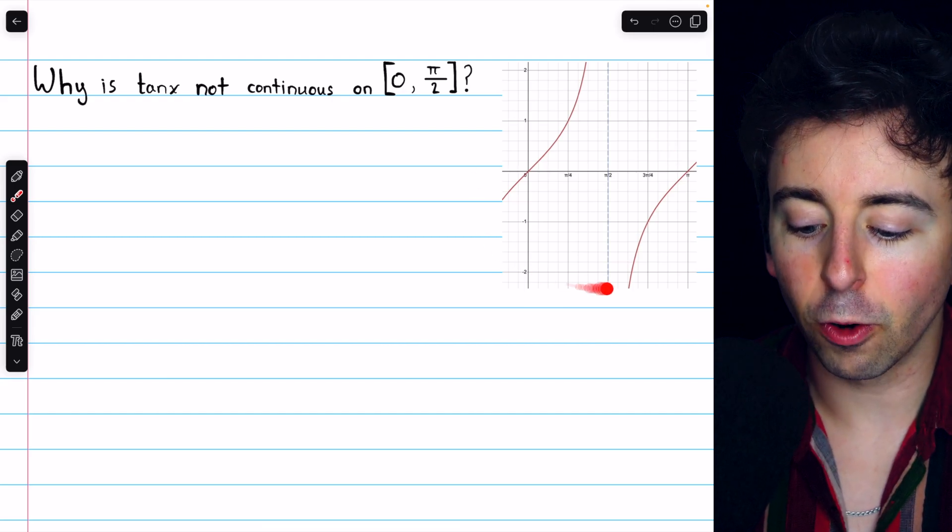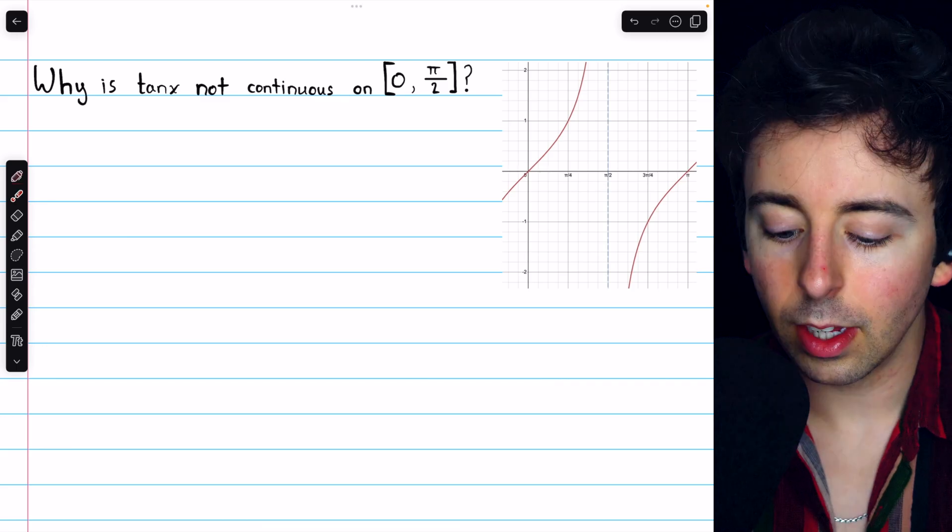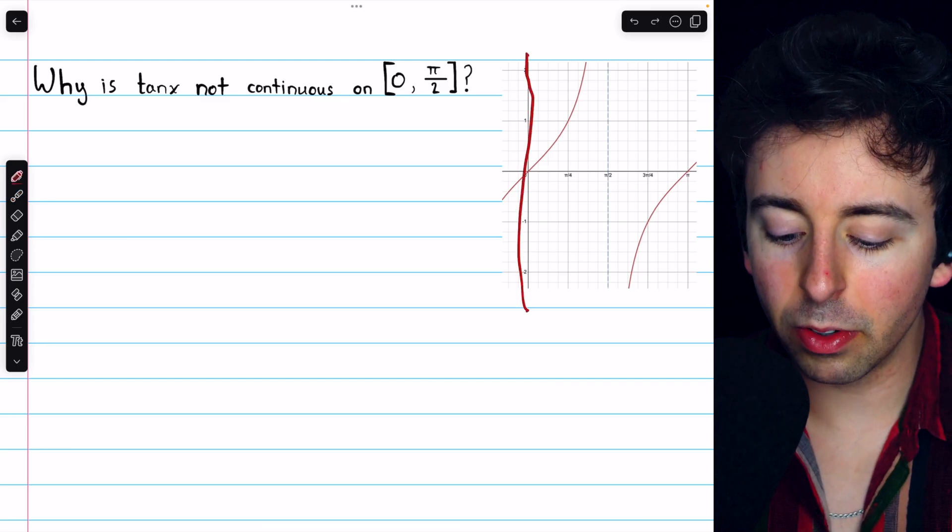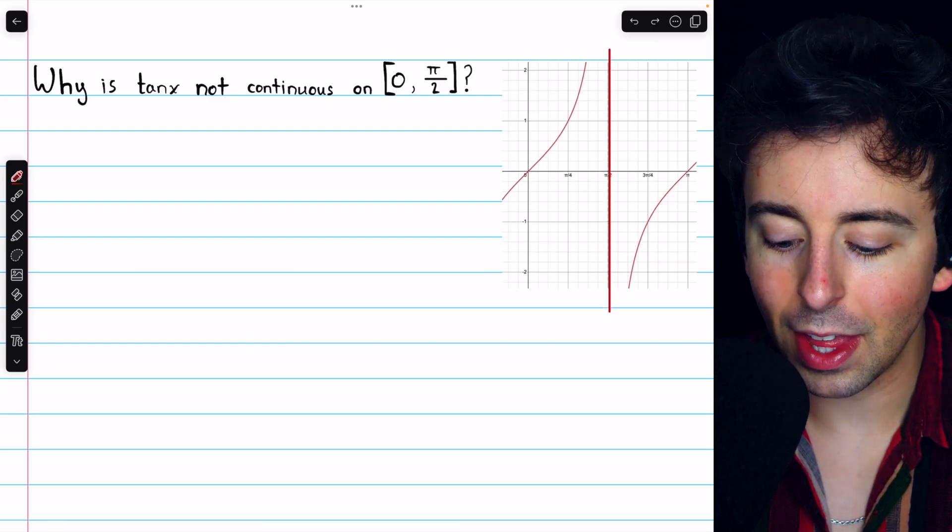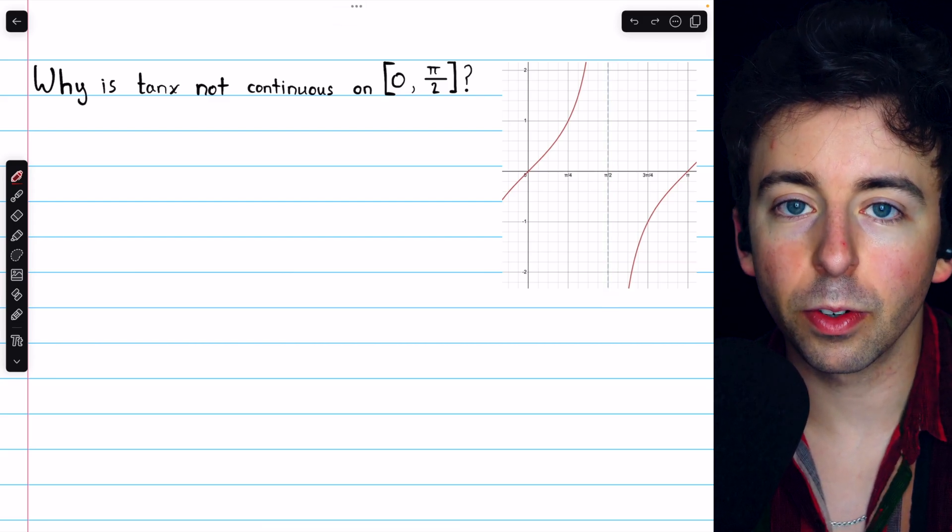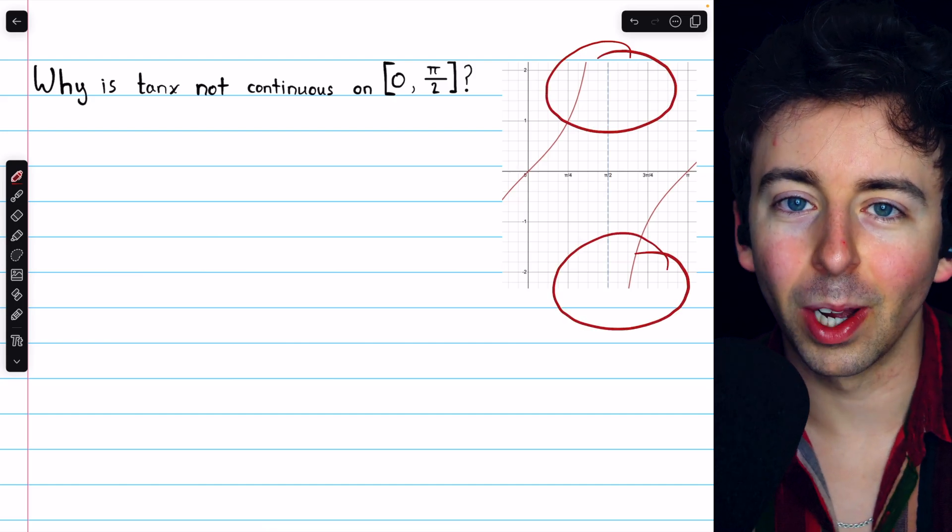For your reference, this is a graph of the tangent function, which hopefully is a shape you are familiar with. As you can see, x equals 0 is over here on the y-axis. And this light blue dotted line on the right, that's at x equals pi over 2. And it does kind of look like something fishy is going on there.